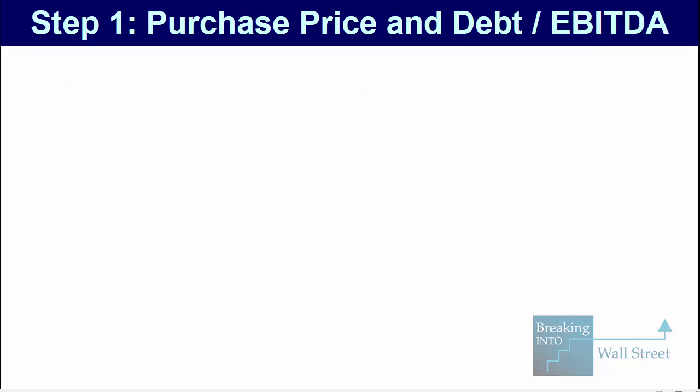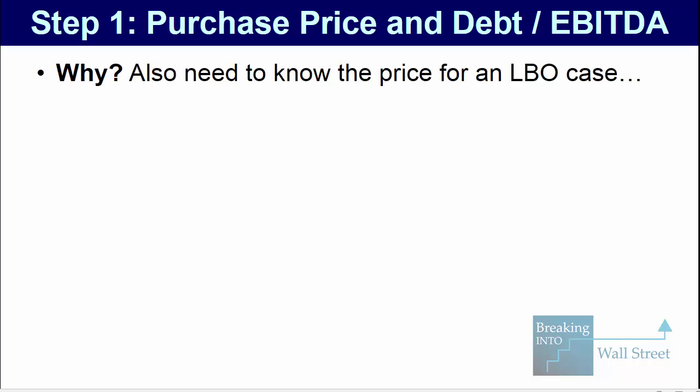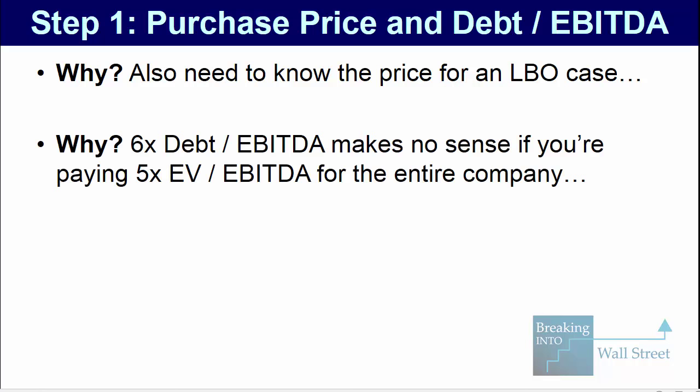Let's go into step one and look at the purchase price and the initial guess for the debt-to-EBITDA ratio. Both these assumptions are tied together pretty closely because you also need to make an assumption for the purchase price in an LBO case study like this. It doesn't really make sense to assume six times debt to EBITDA if you're only paying five times enterprise value to EBITDA for the whole company. So the amount of debt you use is closely related to what you're actually paying for the company, and these assumptions have to make sense together.